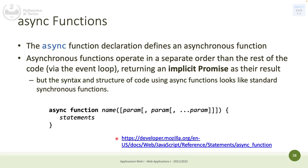A few things about that. The async function is a declaration that can define an asynchronous function and return an implicit promise. You don't have to write 'new Promise, resolve, reject' — it implicitly returns a promise as the result. So it looks like a normal function. Writing 'return something' is like writing 'new Promise' at the beginning and then resolving with something. It's just shorter, clearer, and looks like normal code.